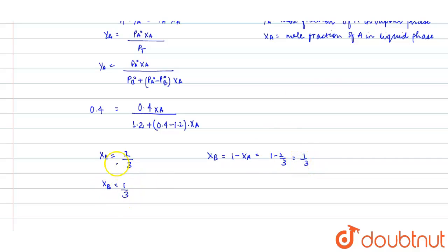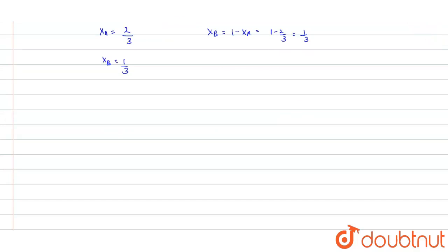But we need to calculate the total pressure here. So again by the expression, P_total = P_A° X_A + P_B° X_B. We can rewrite: P_A° value given in the question is 0.4 × X_A we have calculated is 2/3,